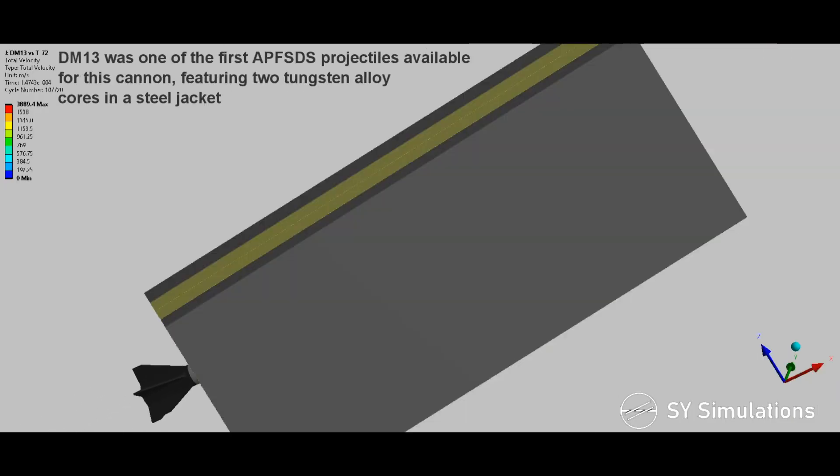DM-13 was one of the first armor-piercing fin-stabilized discarding sabot projectiles available for the cannon, featuring two tungsten alloy cores and a steel jacket.